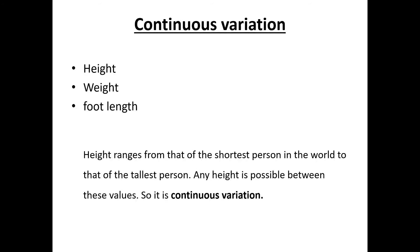The first type is continuous variation. It can be differentiated into height, weight, and foot length. Height ranges from the shortest person in the world to the tallest person, and any height is possible between these values — so it is a continuous variation. It results in a range of phenotypes between two extremes, and it is presented in a histogram.